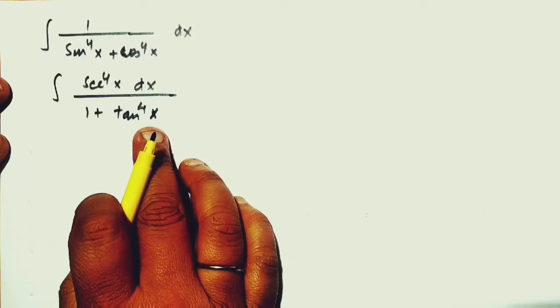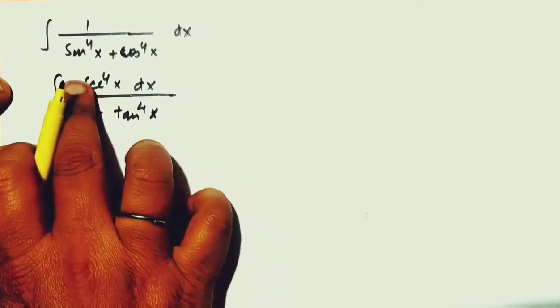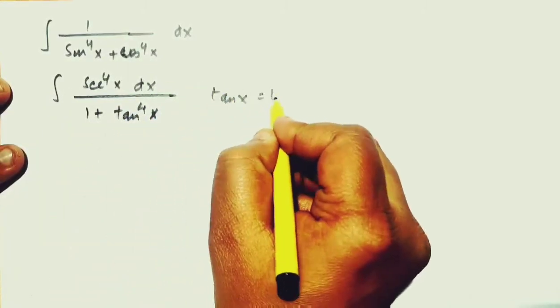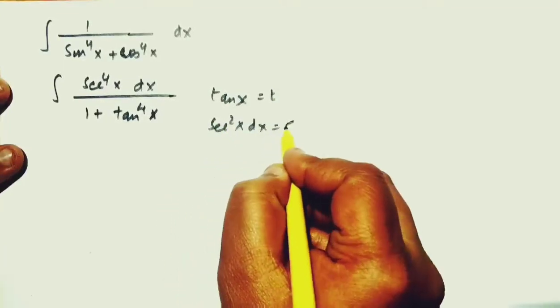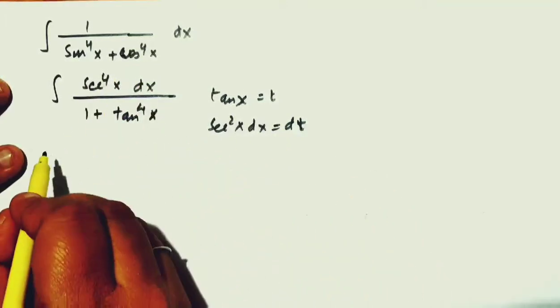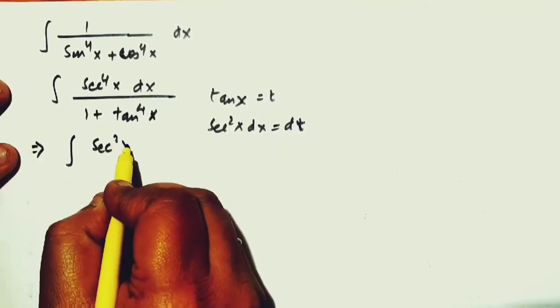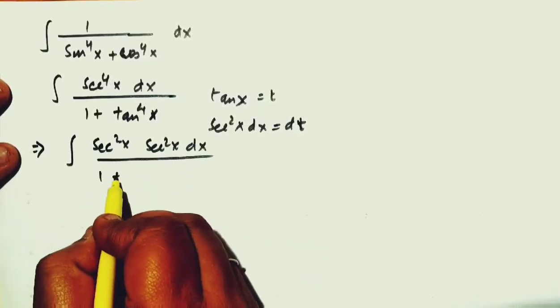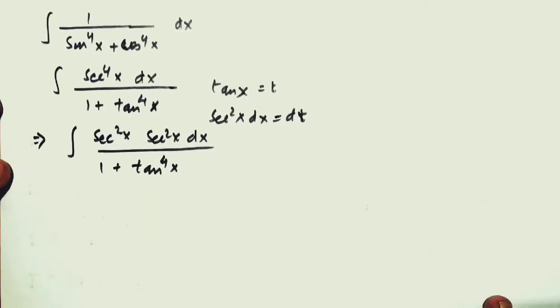Now, what is the benefit of this one? Hum ye jante hai ki agar hum tan x ko t assume karte hai then sec square x humara nikal jayega. So, we will try to look at tan x equal to t, then sec square x dx equal to dt. Issay ek sec square x humara hat jayega. Toh, isko hum express kar sakte hai: sec square x into sec square x dx divided by 1 plus tan to the power 4x.